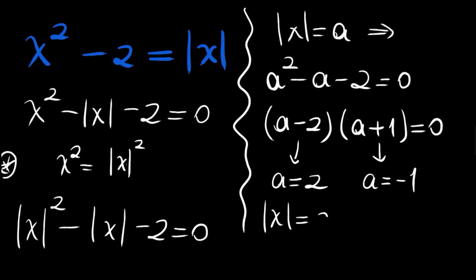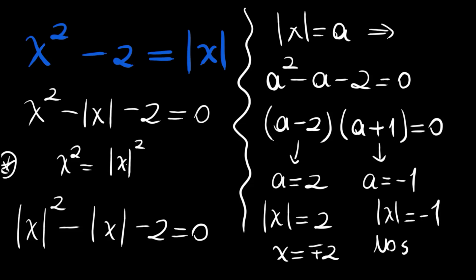Remember, we said absolute value of x is equal to a. So absolute value of x equals 2 gives x equals plus or minus 2. And absolute value of x equals minus 1 yields no real solution. So our only real solutions are x equals plus or minus 2. This is the first method.